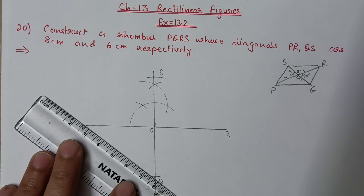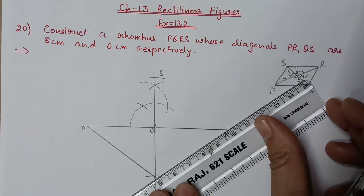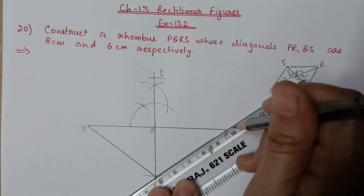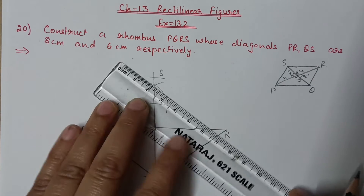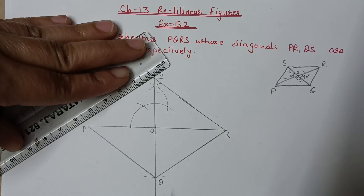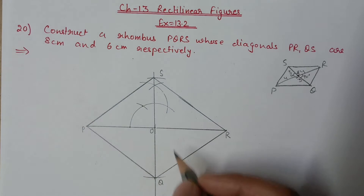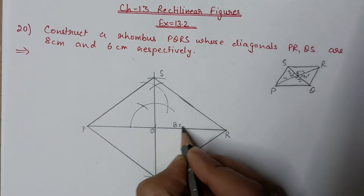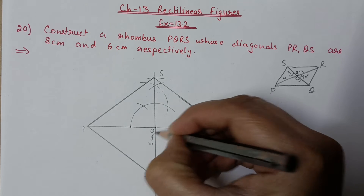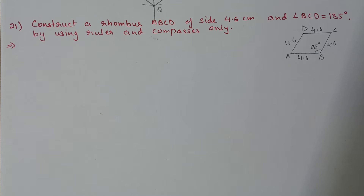Join all four points to complete the rhombus. Write all the measurements: this diagonal is 8 centimeter, this one is 6 centimeter, and the angle between them is 90 degrees. Our figure for question 20 is ready.